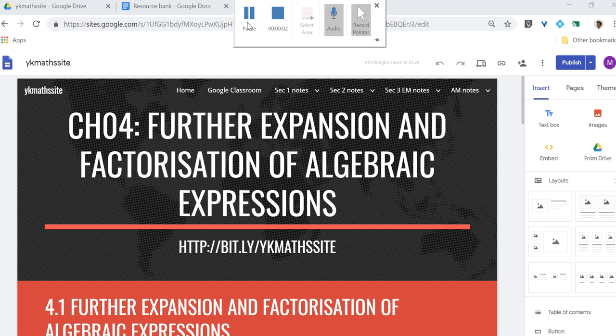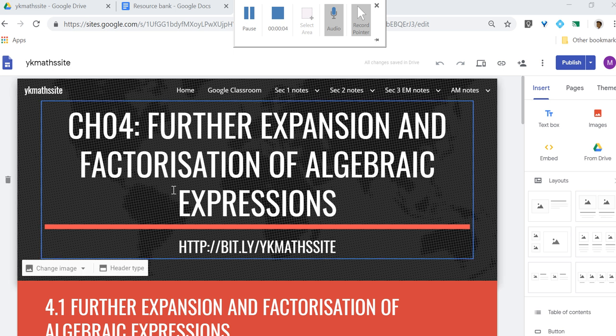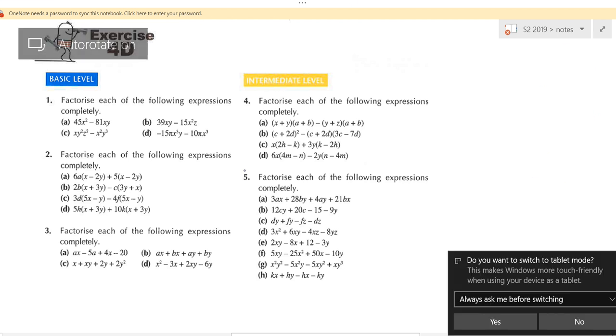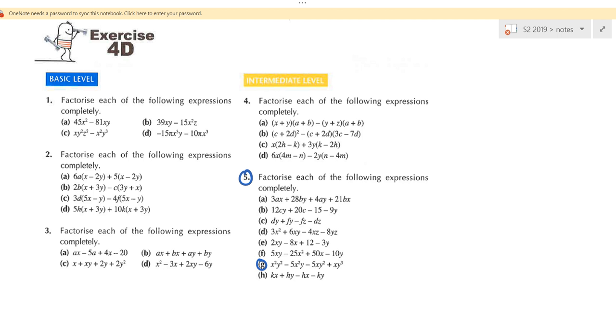Nisa, right so we start chapter 4. So now which question again? 5G. What else? 1D. Alright.